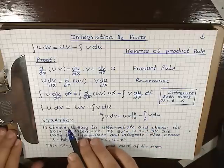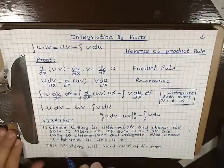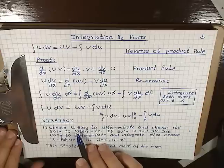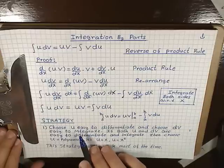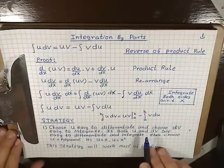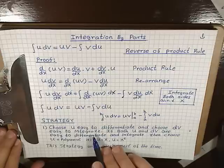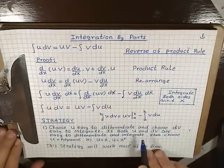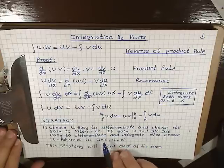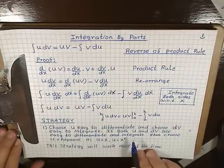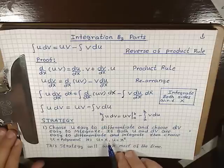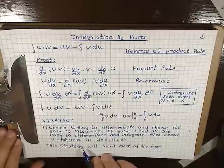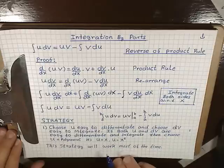So what is the strategy? How do we choose u and how do we choose dv? Choose u to be easy to differentiate, and choose dv to be easy to integrate. If both u and dv are easy to differentiate and integrate, then choose u to be the polynomial — for example, u equals x or u equals x squared. This strategy will work most of the time.